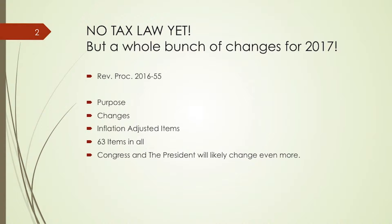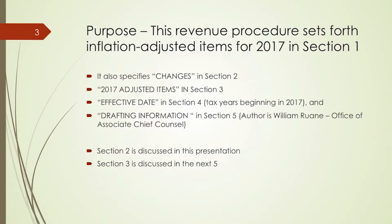There are 63 items in all contained in these updates. Congress and the President will probably change a substantial amount more over the next four years. This revenue procedure sets forth the inflation-adjusted items for 2017 in Section 1, specifies changes in Section 2, lists the 2017 adjusted items in Section 3, and has an effective date in Section 4 for tax years beginning in 2017. The author is the Office of the Associate Chief Counsel. We'll discuss Section 2 in this presentation, and Section 3 in the next five presentations.